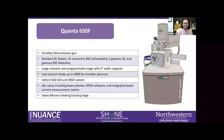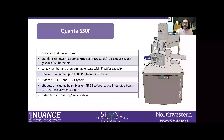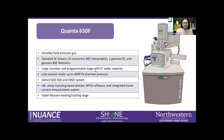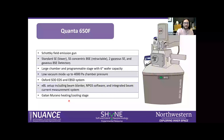The Quanta 650F is also a Schottky field emission gun with an extensive array of detectors: a standard lower secondary electron detector, a solid-state concentric backscatter detector (retractable), two gaseous SE detectors, and a gaseous backscatter detector. It has the largest specimen chamber of all our SEMs and a programmable stage that can move in steps for large-area analysis. Low vacuum mode can increase pressure up to about 4000 pascals. It has an EDS detector, an EBSD detector for electron backscatter diffraction, an EBL setup with beam blinker, PGS software, and an integrated beam current measurement system, plus the Gatan Murano heating stage and a cooling stage for in-situ experiments.